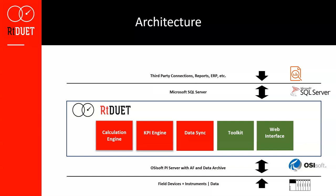This is a high-level diagram of the architecture of RTDuet. At the bottom we have the field devices, PLCs, and sensors, which are connected through interfaces to OSIsoft Pi. RTDuet doesn't connect directly to any sensors — we let Pi look after that. RTDuet sits on top of Pi; the back end for RTDuet is OSIsoft AF. We have five components installed with RTDuet: the red ones are Windows services running in the background, and the two green ones are applications users interface with. The Calculation Engine continually looks at Pi tags using trigger logic to determine if something is in a downtime or slowdown state. The KPI Engine uses all downtime events created by the Calc Engine and generates KPI numbers — we produce 16 KPIs right out of the box, but can configure the system to produce custom KPIs as needed.